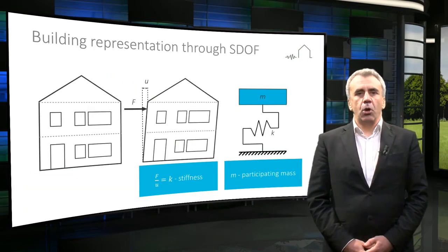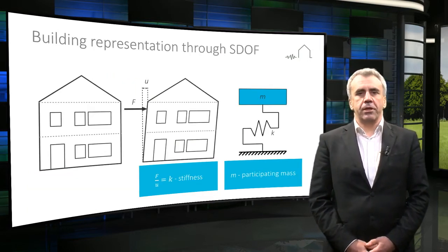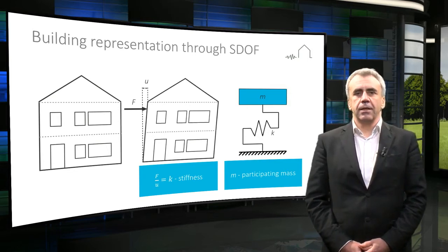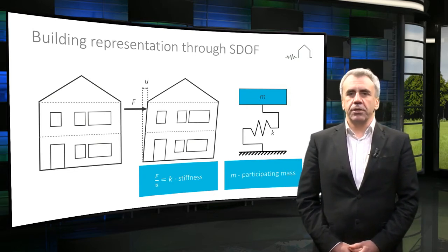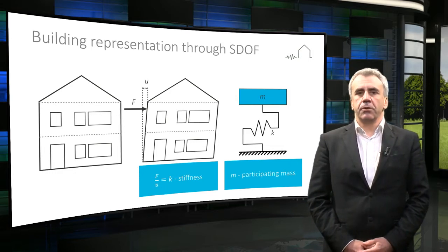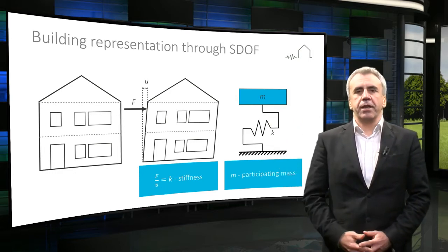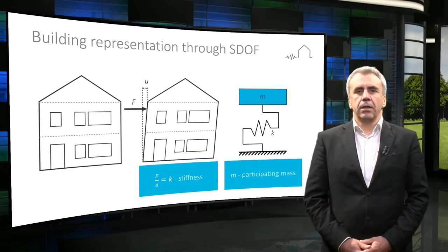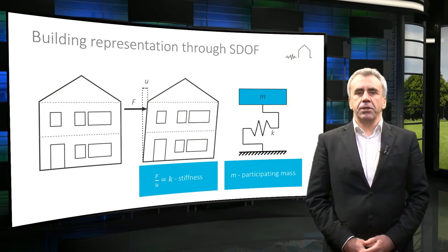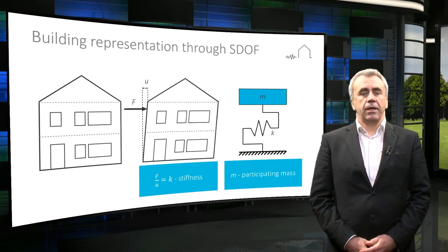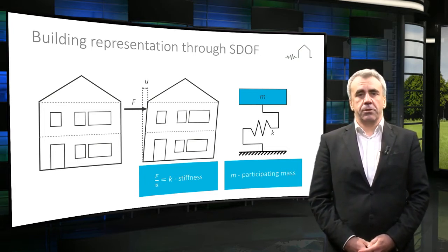The small tilting motion of a residential house sketched in this slide can be modelled by means of a single degree of freedom system that moves horizontally, as you see here. The main characteristics of this system are its mass and stiffness.